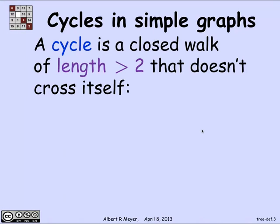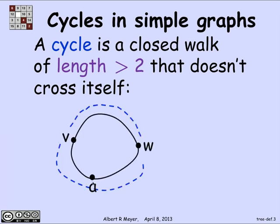It's a closed walk of length greater than 2 that doesn't cross itself. Not crossing itself is the standard definition of a cycle that we were using in a directed graph. It simply means that it's a path except that the beginning and end vertex are the same. So it looks like you start someplace at v, and then you go around to a and to w, and it's all distinct vertices as you go around in this path, except that the path ends where it starts at v, which is what keeps it from being a path and makes it a cycle.